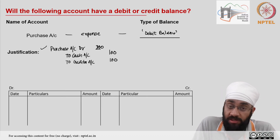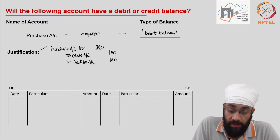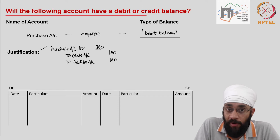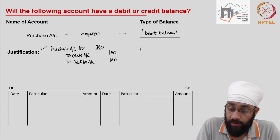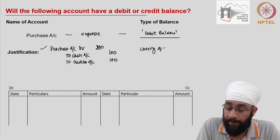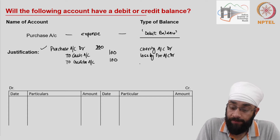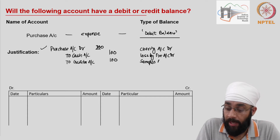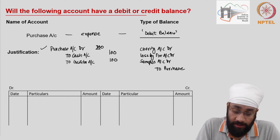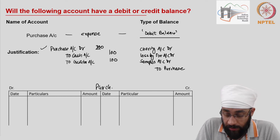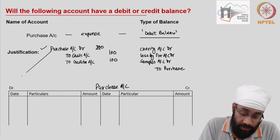Is there any other entry you would write for purchase? It is possible that you lose goods in fire, give away free samples, or give to charity. When that happens, you write: charity account debit, or loss by fire account debit, or free samples account debit — to purchase. Now let's post these into the purchase account.